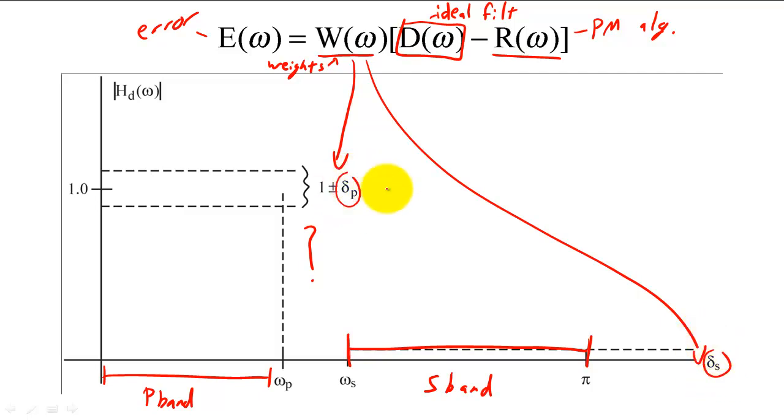These weights will force the filter to not deviate from d omega, the ideal filter, more than a fixed amount.